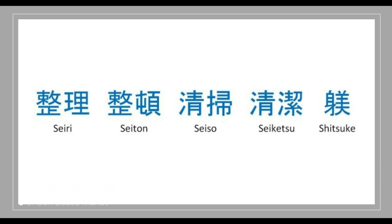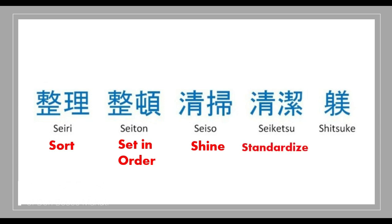The original 5S methodology is formed in Japanese language. However, it also has a direct translation to the English language. Seiri means sort, Seitan which means set in order, Seiso which means shine, Seiketsu means standardized, and Shitsuke which means sustain.